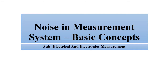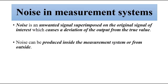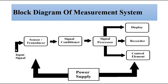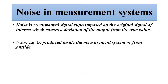Noise in a measurement system is an unwanted signal. Anything which is not related to the desired signal — which is measured from the source, the input side, by the sensor and transducer — is noise. Whatever parameters we are trying to measure, whether it is physical, chemical, optical, or electrical, anything other than the desired signal is noise. We can say unwanted signals which get mixed up and superimposed on the original desired signal, the signal which we are interested in measuring.